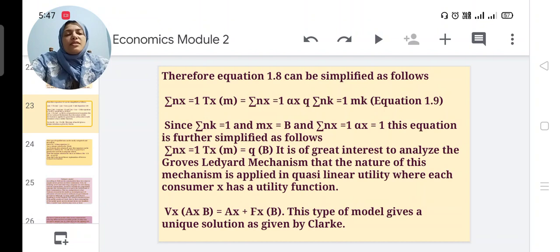Since Σ(k=1 to n)mx = b and Σ(x=1 to n)αx = 1, this equation is further simplified as follows: Σ(x=1 to n)tx(m) = q × b. It is of greatest interest to analyze the Groves-Ledyard mechanism.